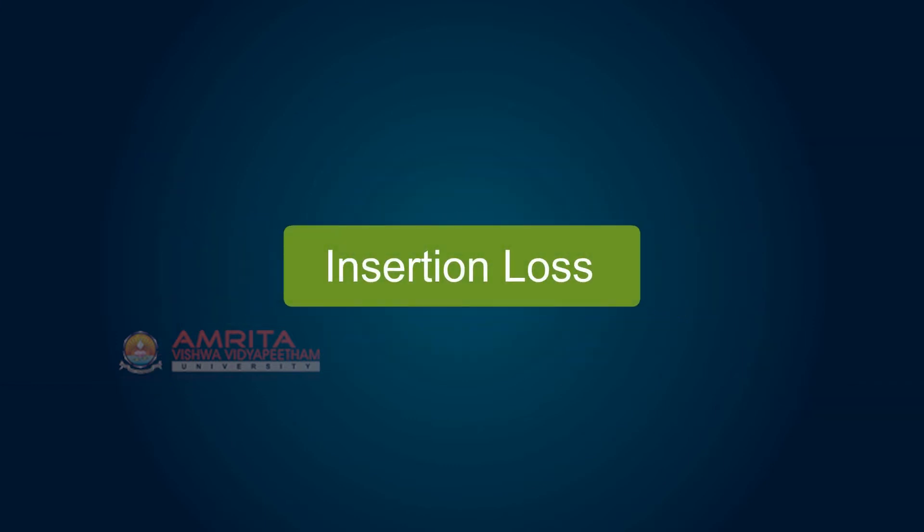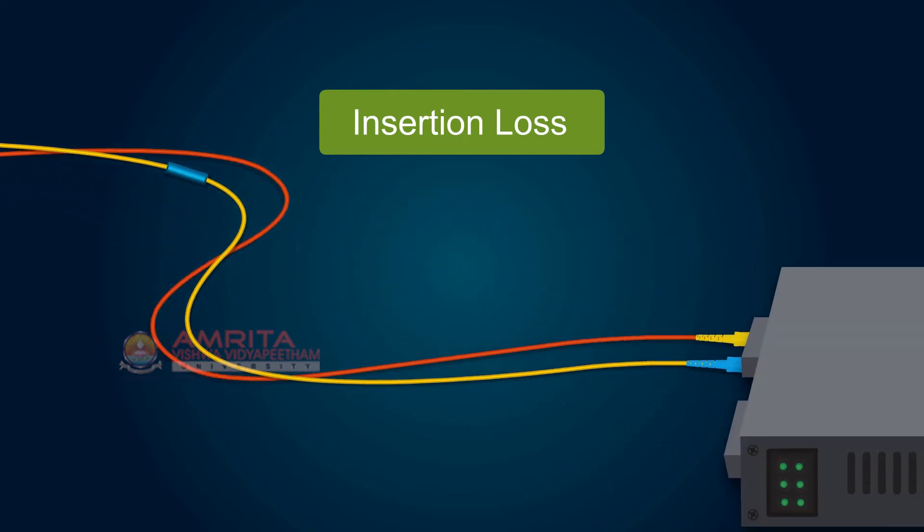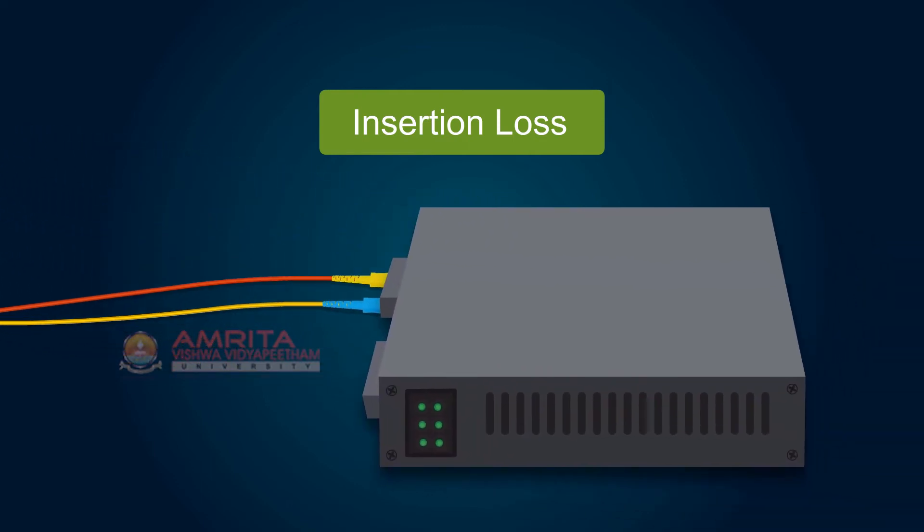Insertion Loss occurs when you insert a connector or splice joint in the fiber link. Insertion loss for a connector or splice is the difference in power that you see when you insert the device into the system. Typical insertion loss is 0.5 dB.